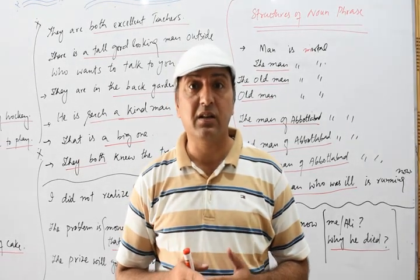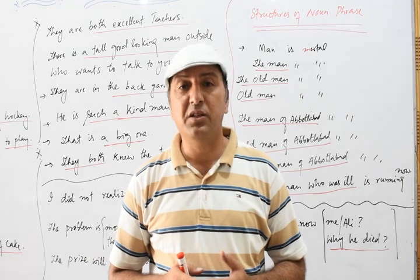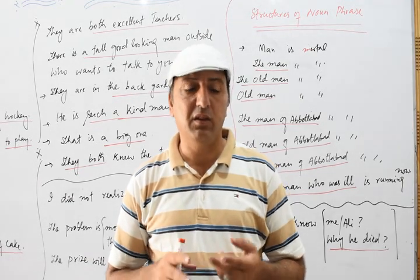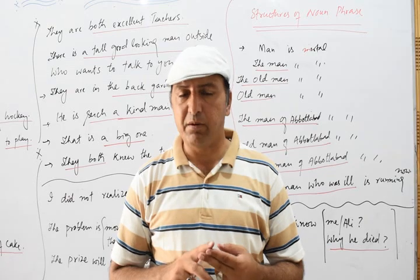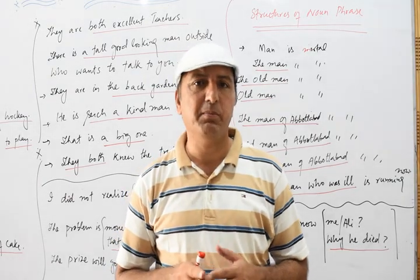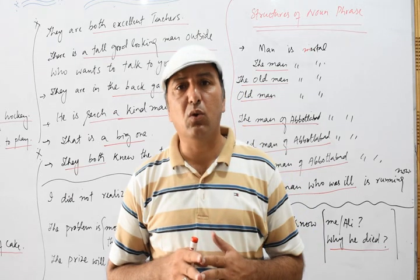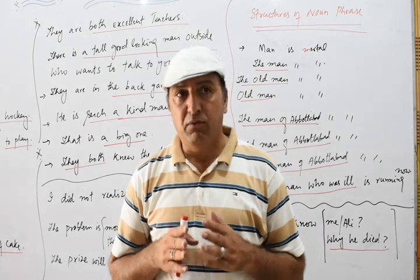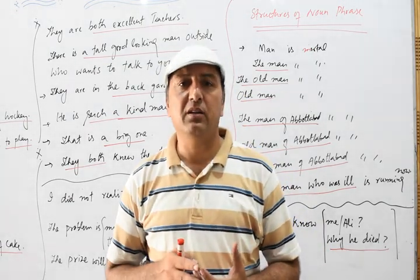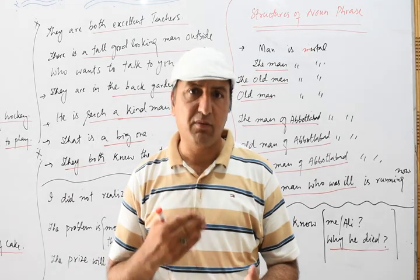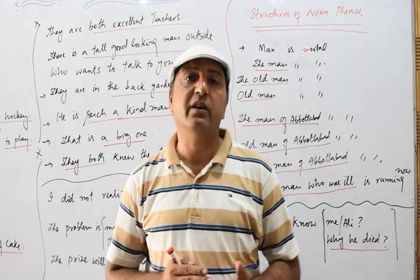Now what is a phrase? A phrase is a group of words which does not give complete meaning. This group of words might be two words, three words, or four words — it depends upon the structure of the sentence. So a phrase is a group of words which does not give complete meaning. Now if this phrase is working as a noun, we call it a noun phrase.